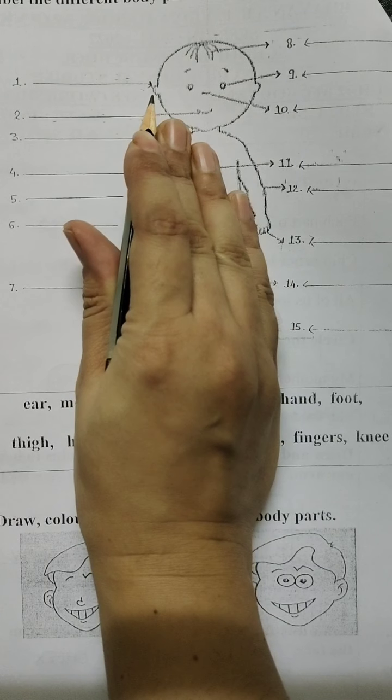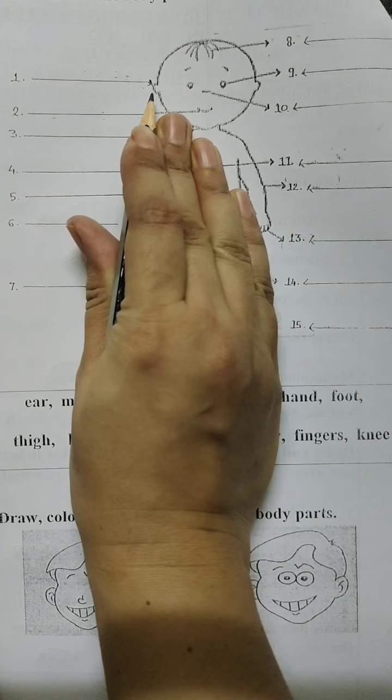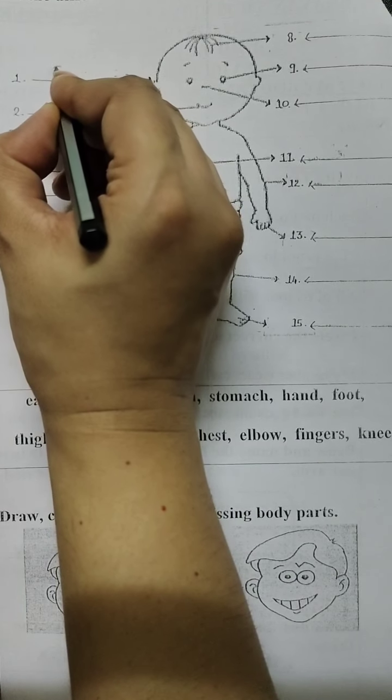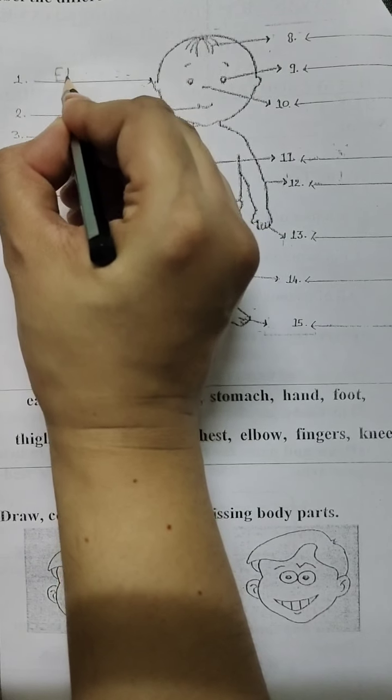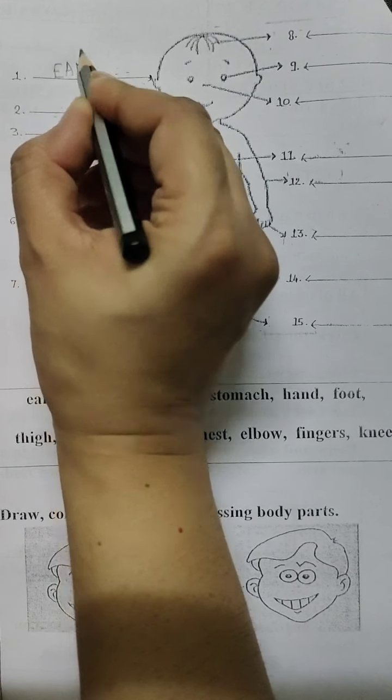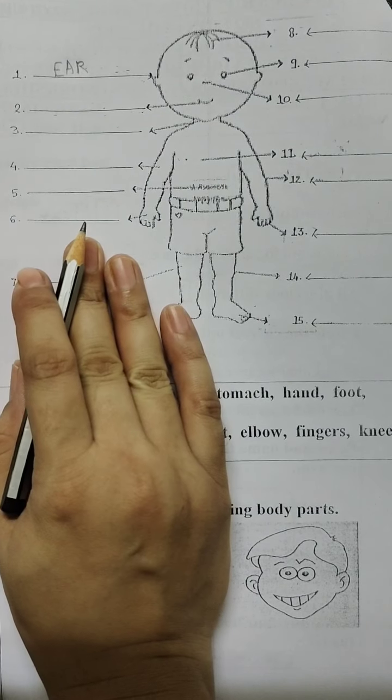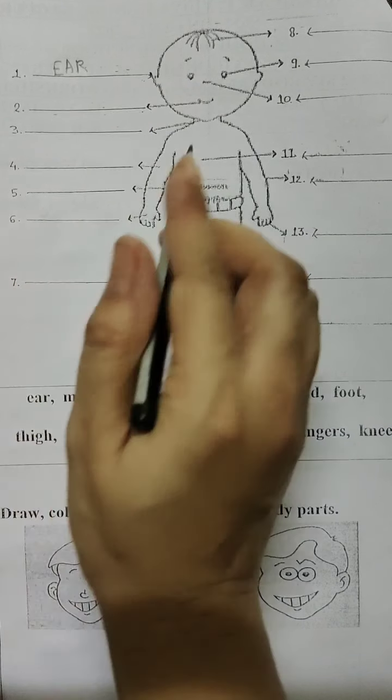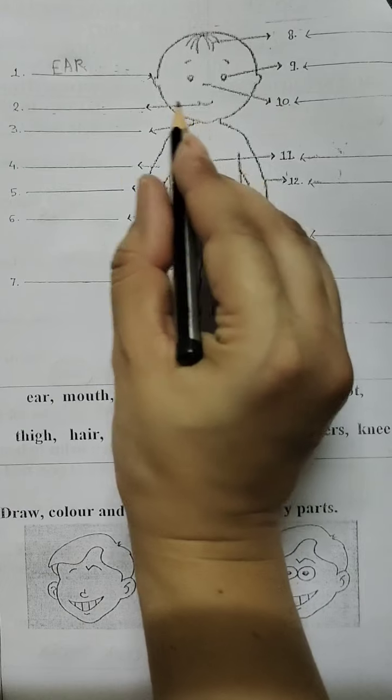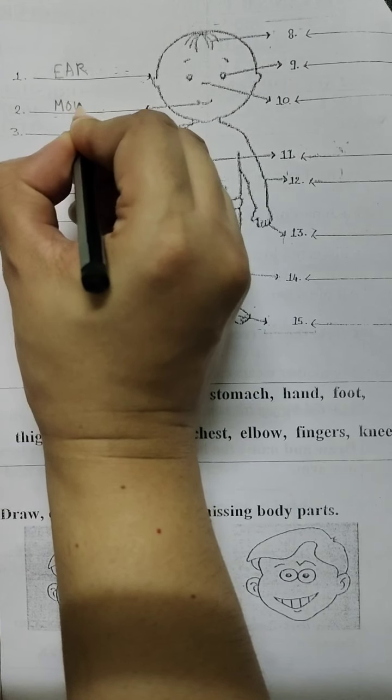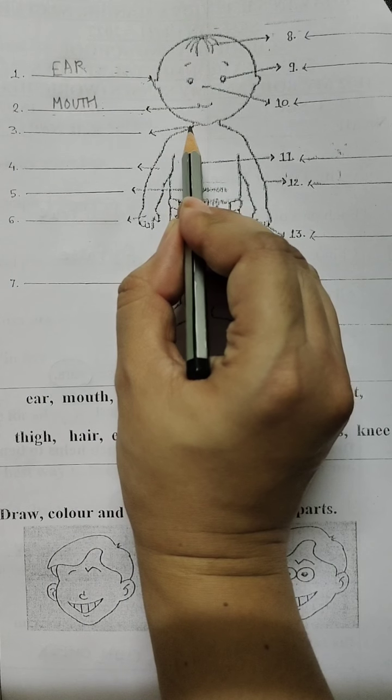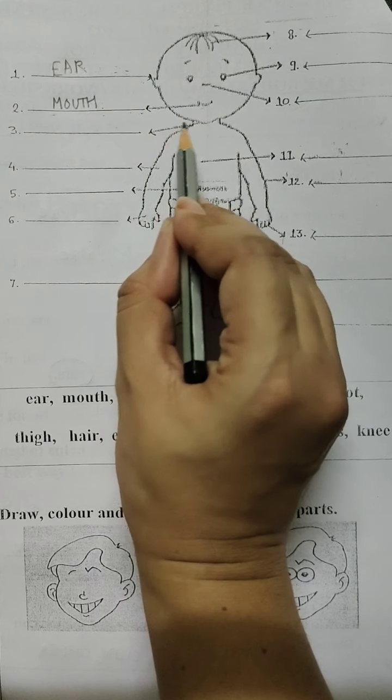The first thing that they have labeled is the ear of the boy. How does the ear help us children? The ear helps us to hear different sounds. Then the next body part that is given is with which we eat. That is our mouth.